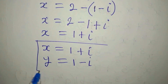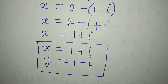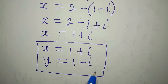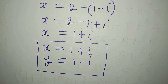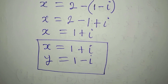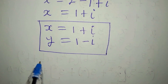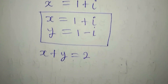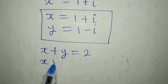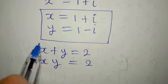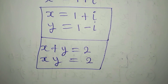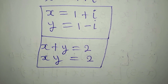By this we have solved the problem in detail. It is obvious that it does not have a real solution, because the i indicates a complex solution. So x plus y equals 2 and x times y equals 2 is not possible in the real world. Thank you for watching.